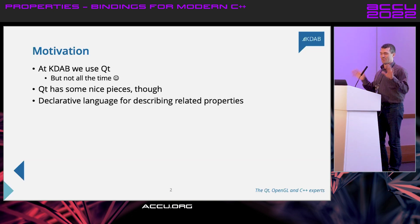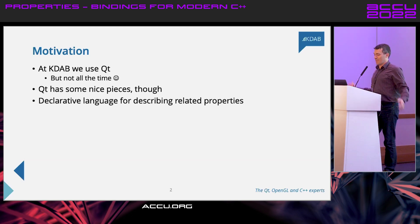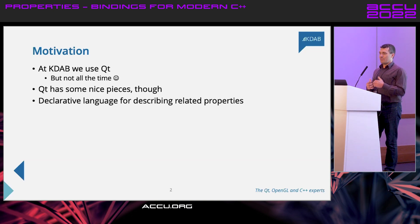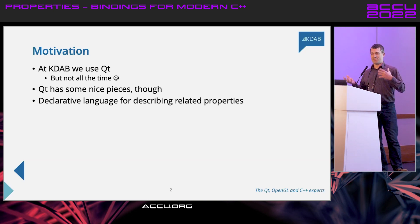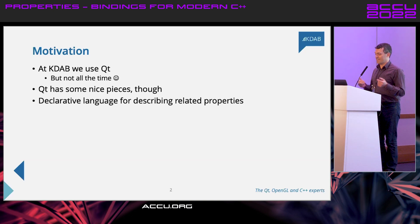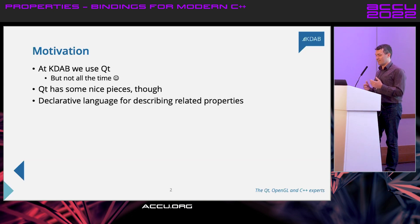Qt does have some nice pieces. Bits of Qt keep ending up in the standard, so some bits of Qt are nice — though clearly people don't like the naming. One really big bit of Qt that we like is it has a complete embedded declarative language for describing related properties. This is used in the user interface layer of Qt extensively to make building UIs in a declarative way. There's a school of thought that for user interfaces, a declarative description of when things are enabled, how big they should be, what color they should be, is quite a good way to build UIs. It fits with how designers tend to specify user interfaces. Qt's got a system for that.